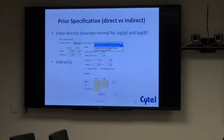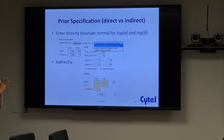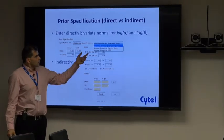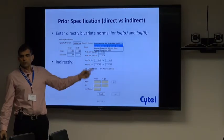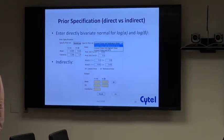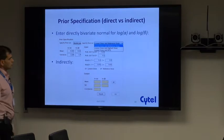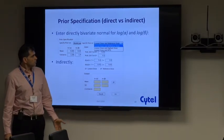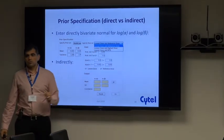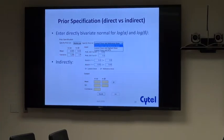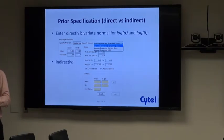You only need these two points because at the log-log scale, the relationship between dose level and toxicity is linear — two points give you everything in between. This information can be converted into the bivariate normal prior distribution. You can elicit information as the probability at the lowest dose and a guess for the MTD, or as the probability at the lowest and highest doses, or the probability at the lowest dose and the reference dose — a mix and match of options.